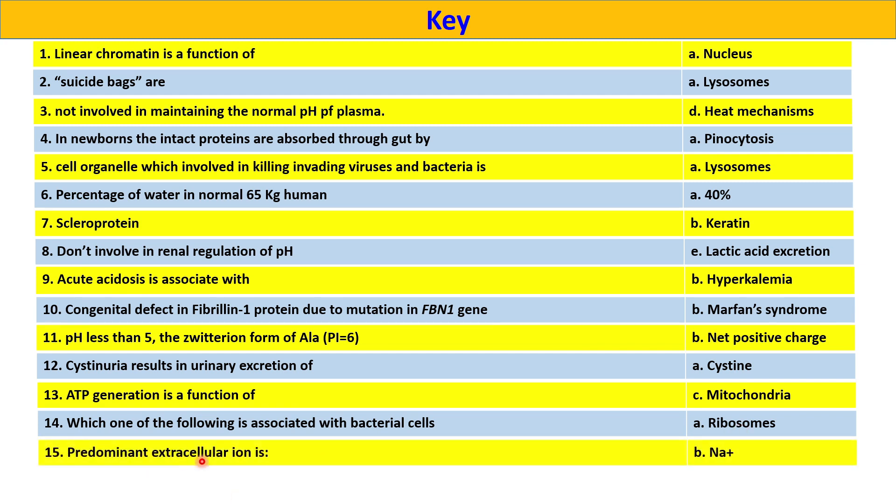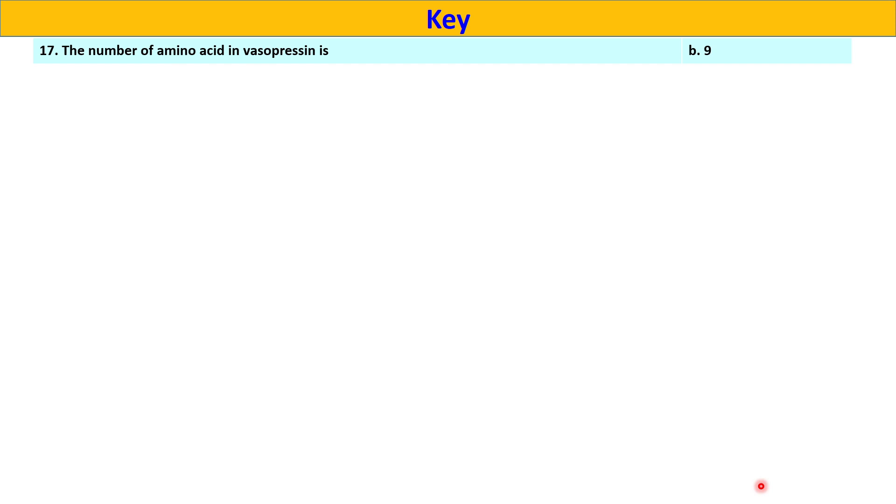Predominant extracellular ion is option B, sodium. pH range of hepatic bile is 7.4 to 8.5. The number of amino acids in vasopressin is 9, it is a nonapeptide. ACE inhibitor is used to treat hypertension. Outer surface of eukaryotic mitochondria harbor proteins, porins.